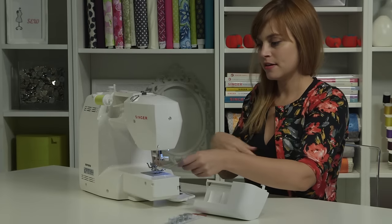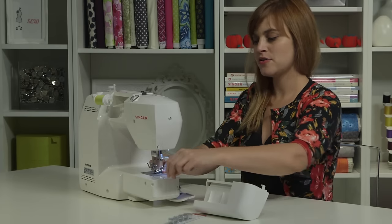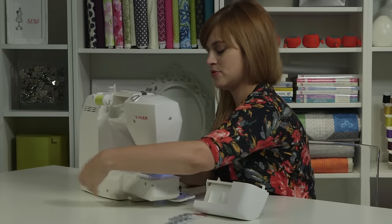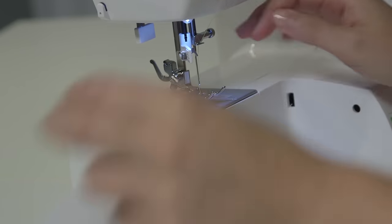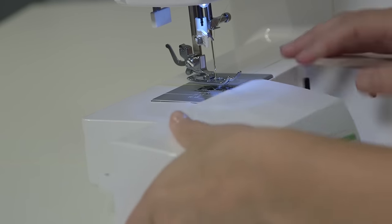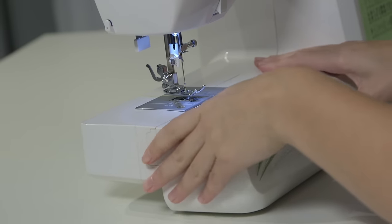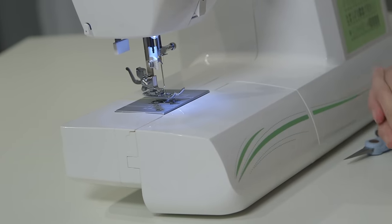We'll hold both tails together and then put them under the foot and towards the back of the machine. And we'll close everything up, so we'll shut our hinge door, put our storage compartment back on, and now we're all set up and ready to sew.